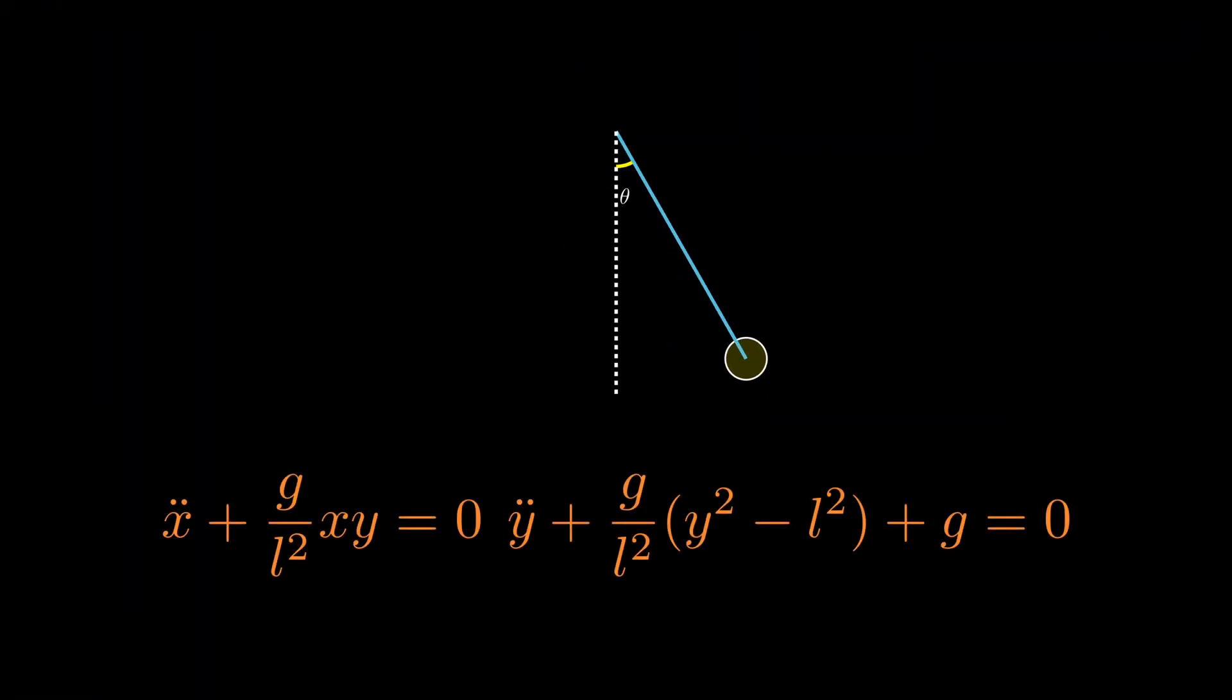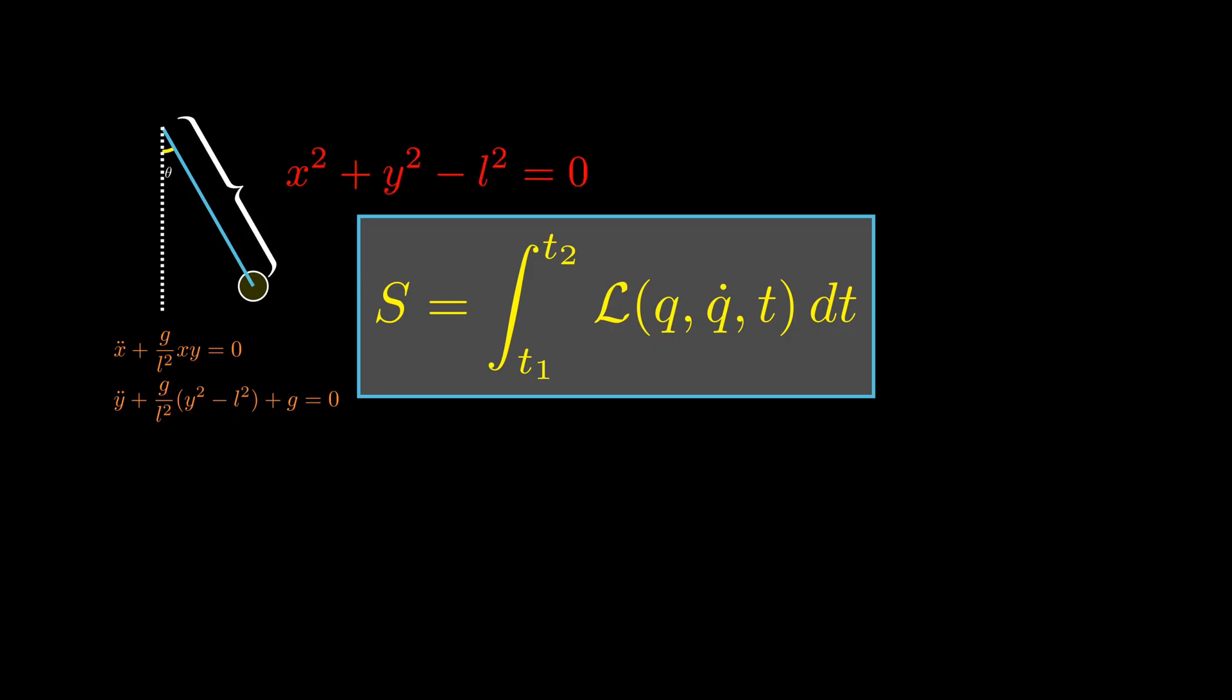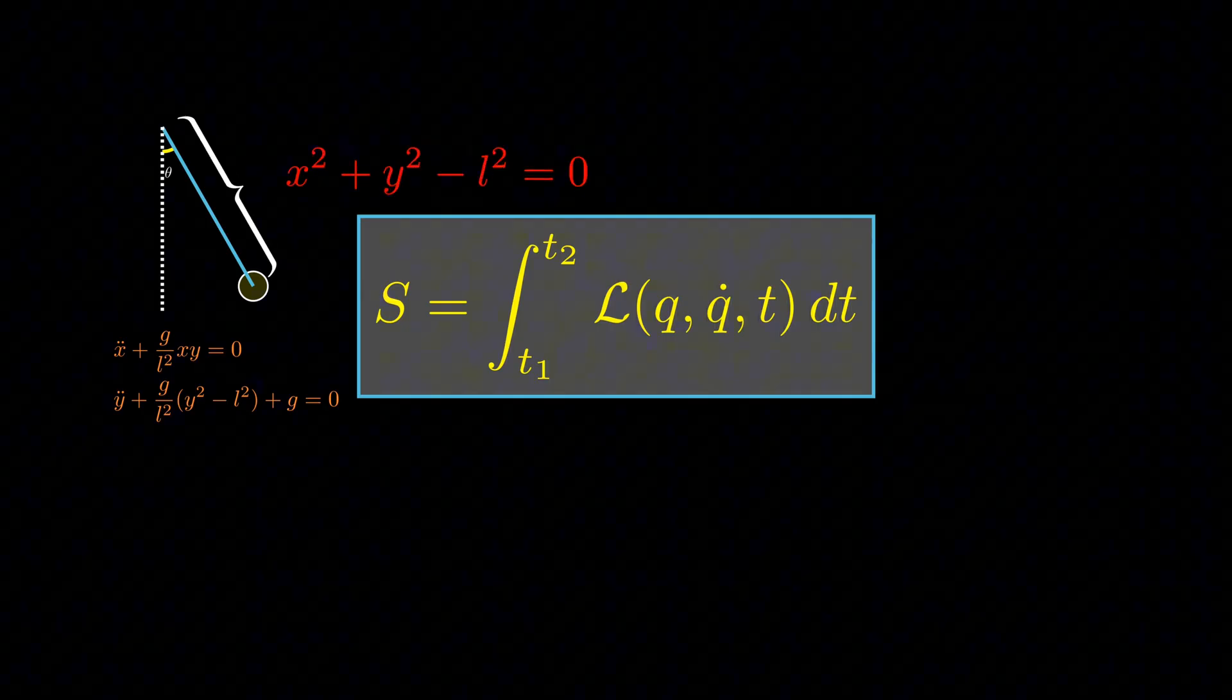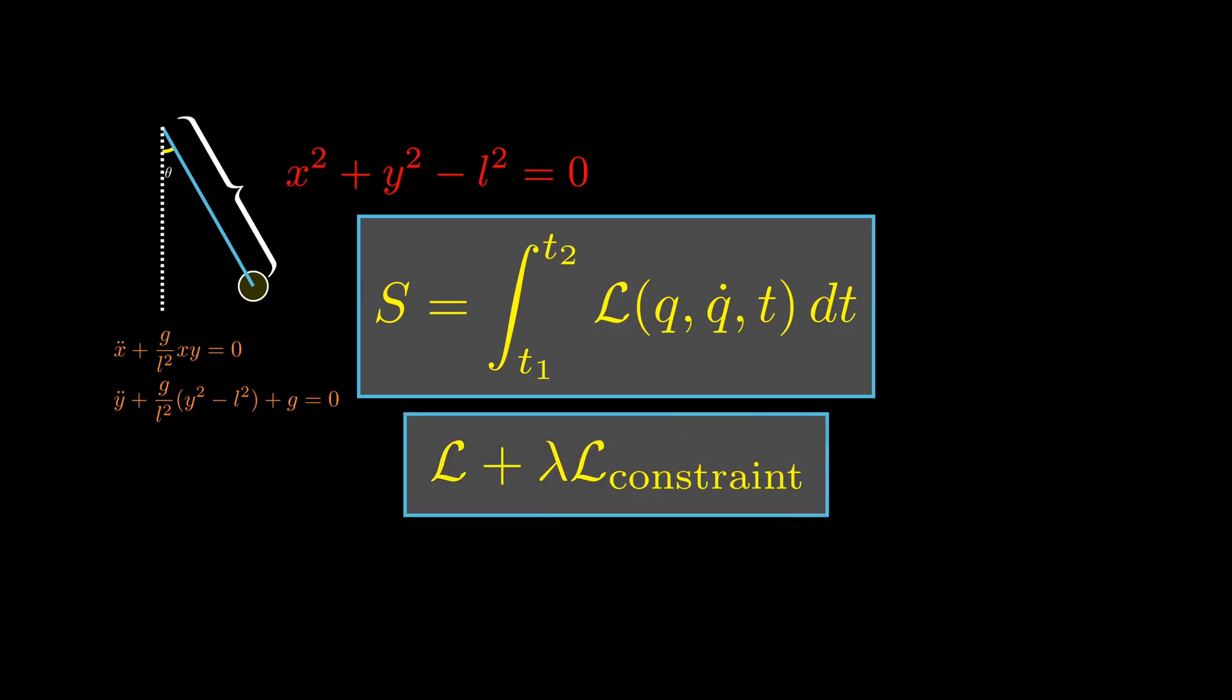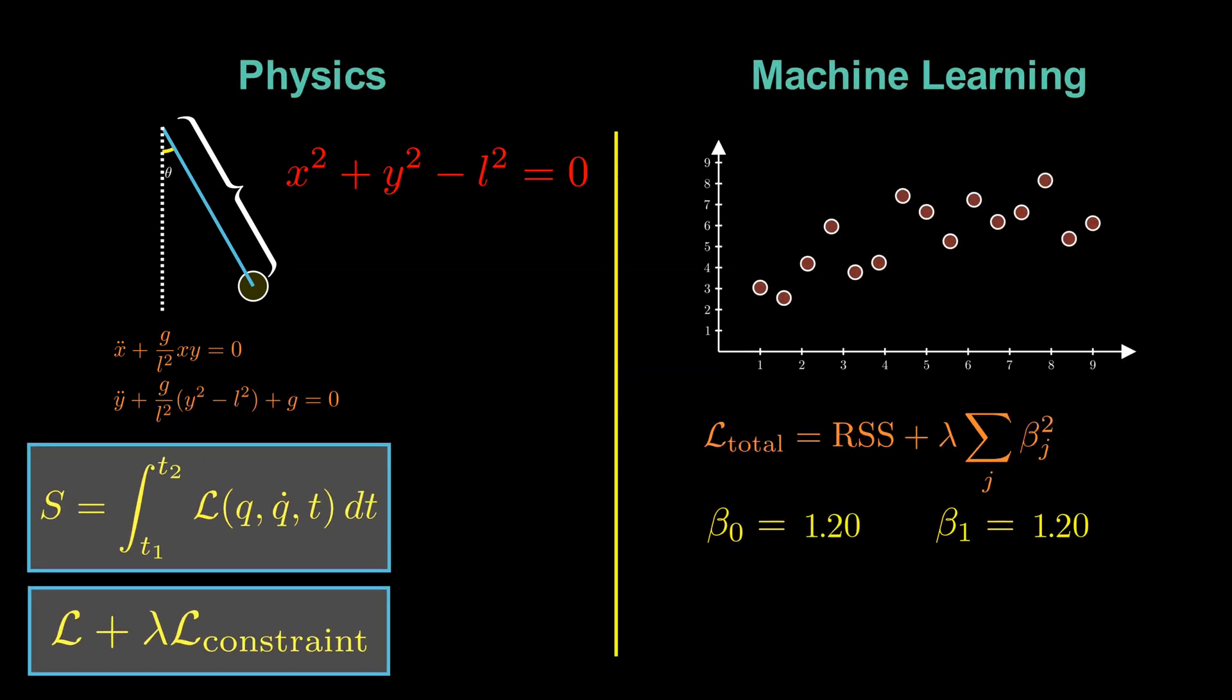Now let's zoom out. In physics, we often derive equations of motion by minimizing the action potential. When constraints are present, we add them to the action using Lagrange multipliers. This is exactly what we're doing in machine learning. To find the optimal values of the free parameters of our models, we minimize the loss function, subject to a penalty term that constrains the parameters.